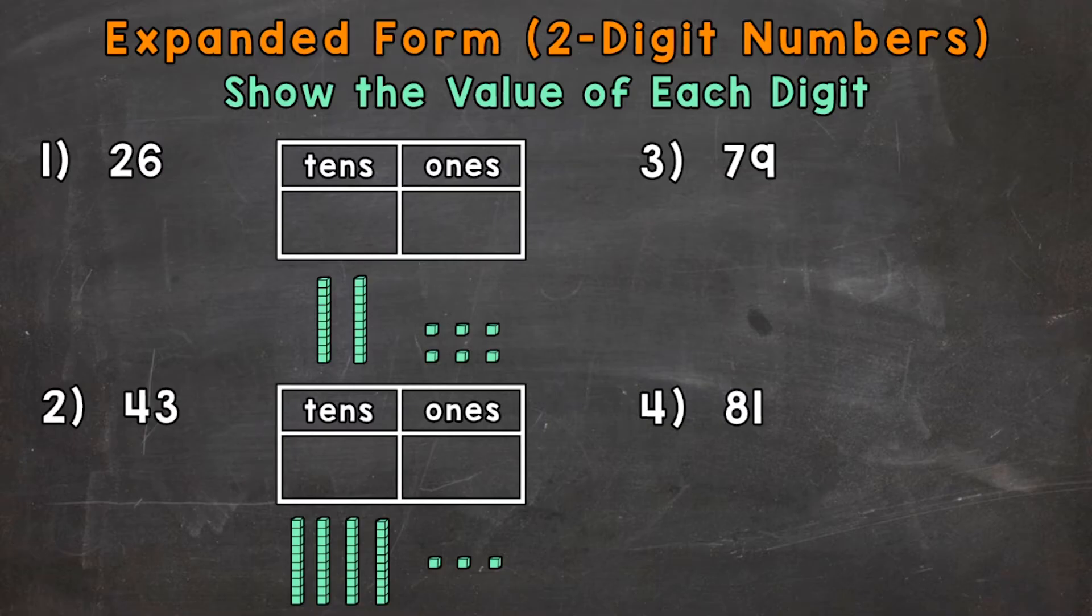So let's jump into number 1 where we have the number 26. We want to expand that number out to show the value of each digit. Let's take a look at the place value chart to the right of the number. So 26, we have two tens, a 2 in the tens place, and six ones, a 6 in the ones place.